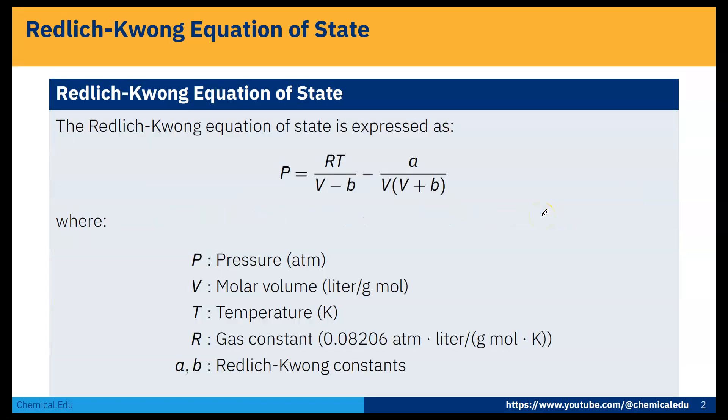Now first, what is Redlich-Kwong equation of state? The Redlich-Kwong equation of state is expressed as P equals RT over V minus B minus A by V times V plus B. P is the pressure in atm, V is the molar volume liter per gram mol, T is temperature, R is the universal gas constant 0.08206 atm liter per gram mol kelvin, and A, B are Redlich-Kwong constants.